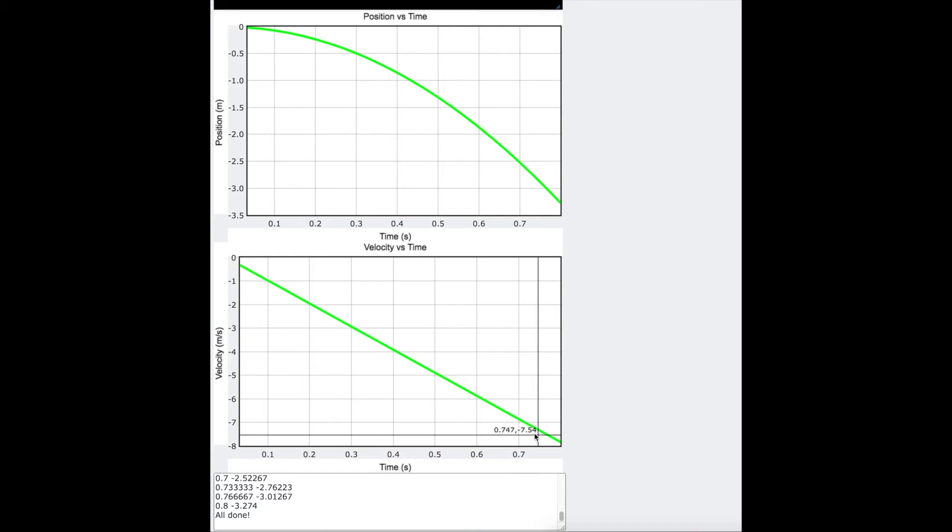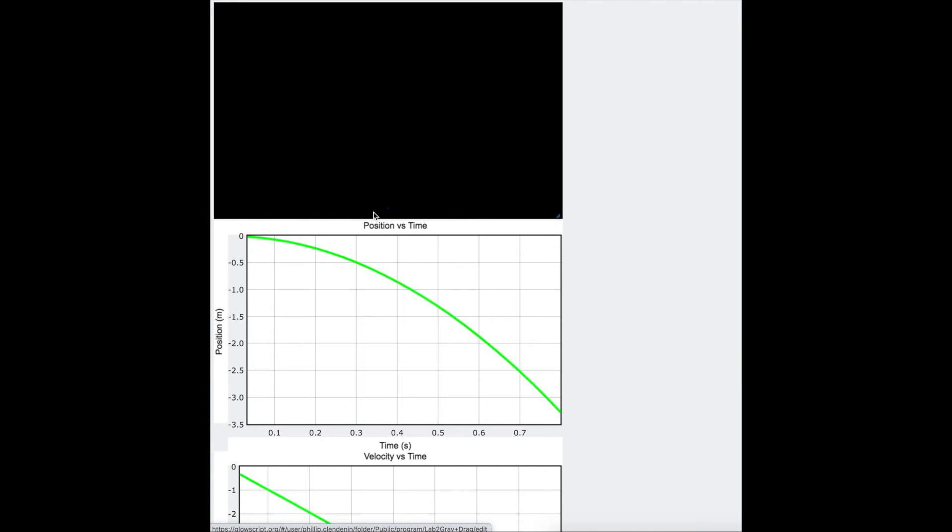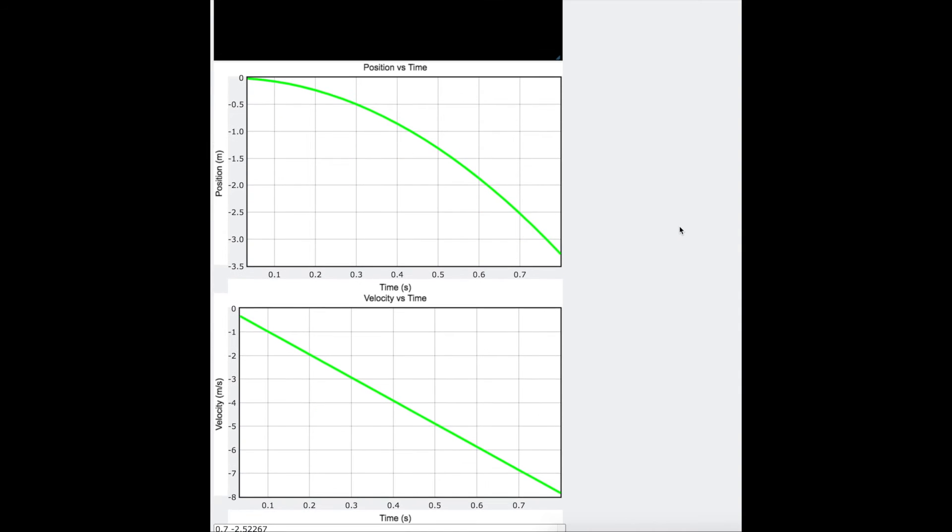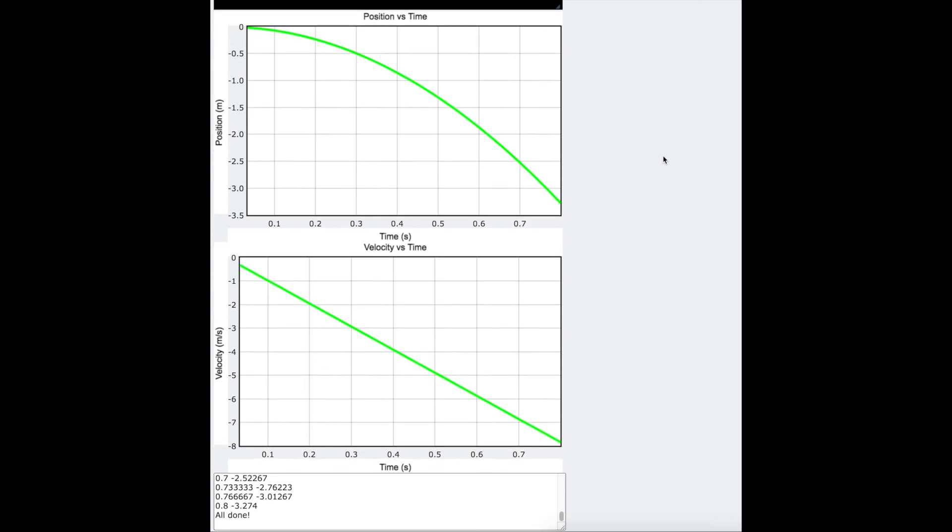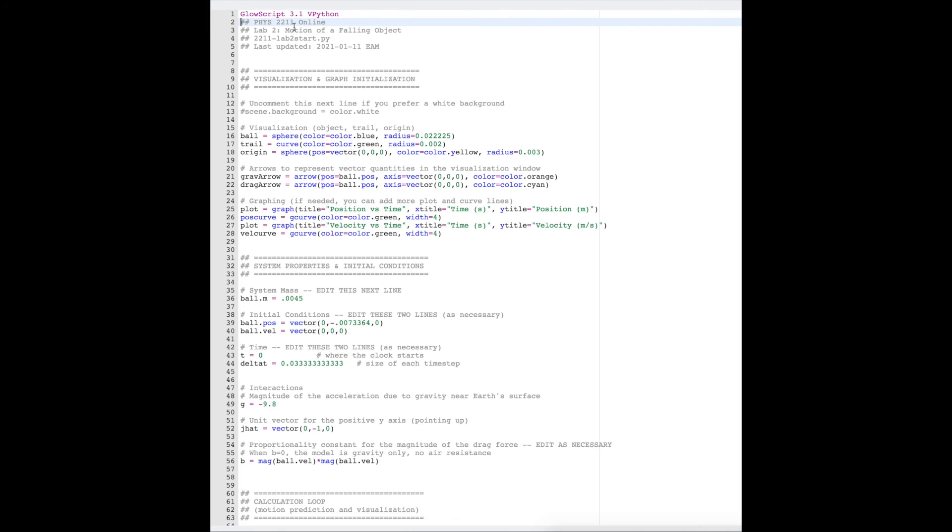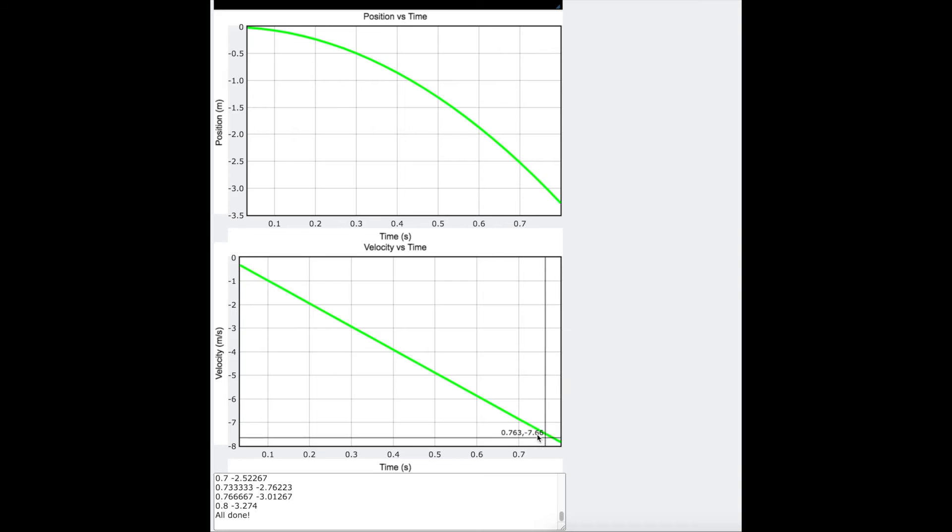However, GlowScript was having errors in doing so. Regardless if I did magnitude of ball.vel times the magnitude of ball.vel, or did mag ball.vel squared, or even creating a new entry for speed where I did that as the magnitude of velocity and then using it, it repeatedly produced the same position as gravity with no drag, which we know makes zero sense.